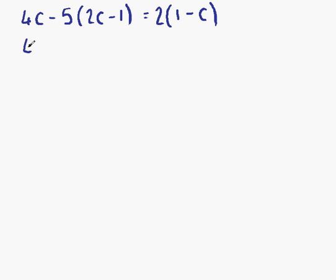So we'll just write down 4c again for the time being. We have minus 5 times this bracket. So minus 5 times 2c is minus 10c. Minus 5 times minus 1. A negative times a negative gives us a positive answer. Minus 5 times minus 1 is plus 5.